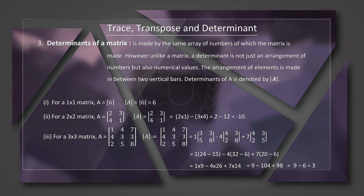Now we solve: 1 into (24 minus 15) equals 9. Minus 4 into (32 minus 6) equals 26, so minus 4 into 26 equals minus 104. Plus 7 into (20 minus 6) equals 14, so 7 into 14 equals 98. Therefore, 9 minus 104 plus 98 equals 3. The determinant is equal to 3.